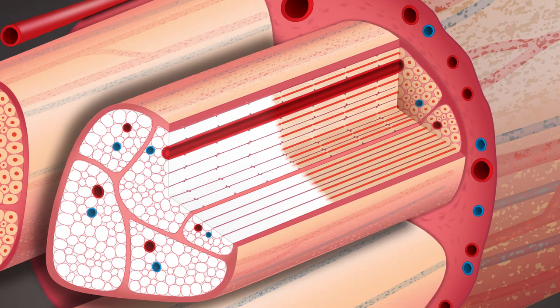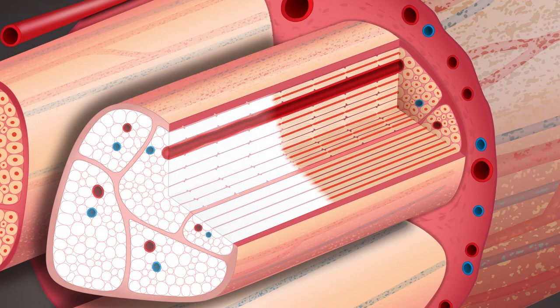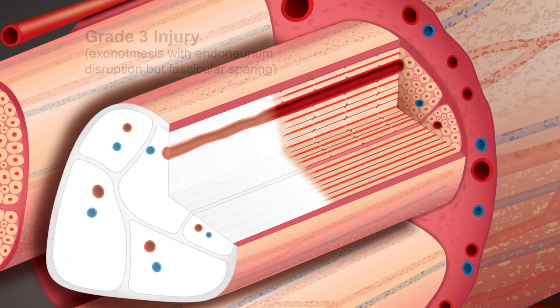In grade three injuries, conduction is lost at and distal to the nerve injury. Axonal continuity is lost along with the endoneurial tubes, while the perineurium and therefore fascicles remain intact. Bleeding and edema lead to scarring, also known as a neuroma in continuity. Axonal misdirection may occur, entailing a poor prognosis. Surgery is considered.